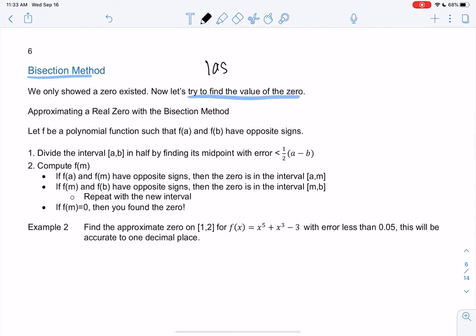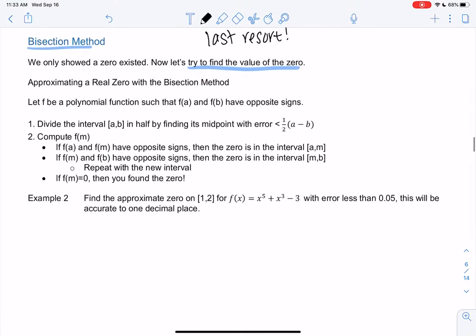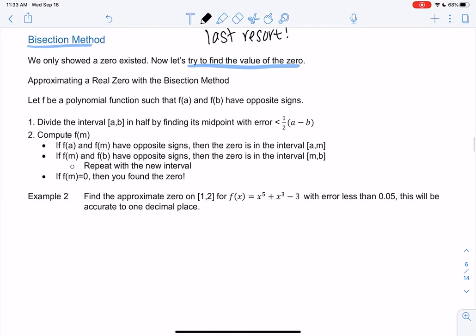The bisection method is a last resort. This is when nothing else is working. Let's go through the method, it'll make more sense once we do one. This will help us find real zeros, not rational. It will help us find rational zeros, but we probably would have already found those using previous methods. This is more for those real zeros that aren't rational.